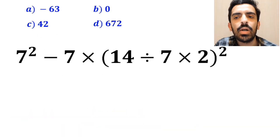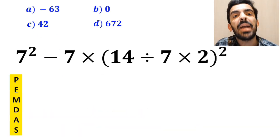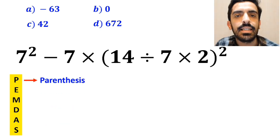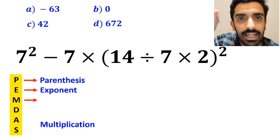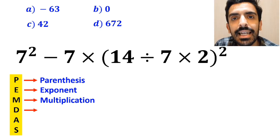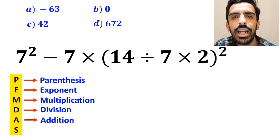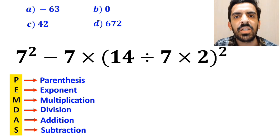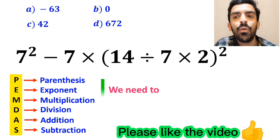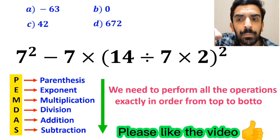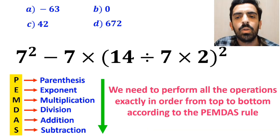To solve this question, we must carefully follow the PEMDAS rule step by step. In this rule, P stands for parenthesis, E stands for exponent, M stands for multiplication, D stands for division, A stands for addition, and S stands for subtraction. We need to perform all the operations exactly in order from top to bottom according to the PEMDAS rule.